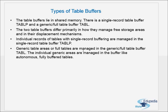The two table buffers differ primarily in how they manage the free storage areas and their displacement mechanisms. How we differentiate these two table buffers is how the free space in the table buffer is managed, and the other is the displacement mechanisms. Individual records of tables with single record buffering are managed in the single record table buffer TAB LP.